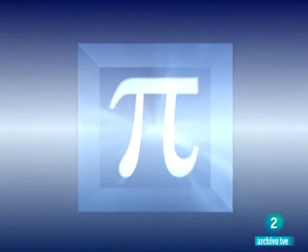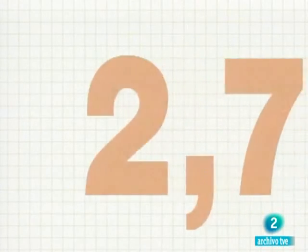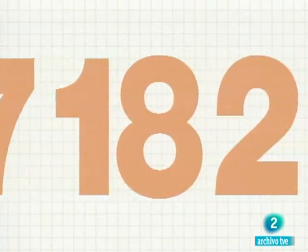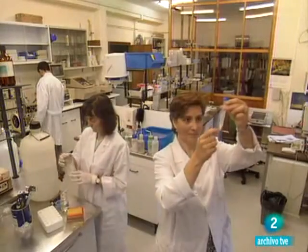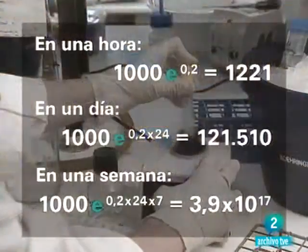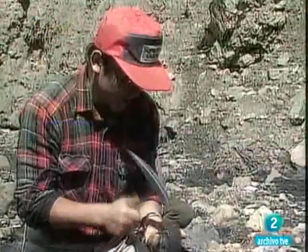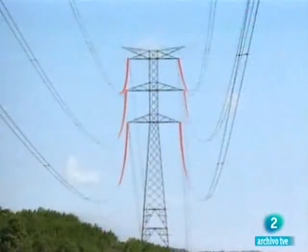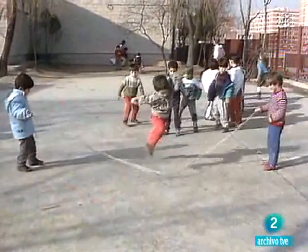Otro número de apariencia extraña y también con nombre de letra es el número e, la base de los logaritmos neperianos. Otro número irracional con infinitas cifras decimales. 2,7182818. Un número que aparece cuando queremos cuantificar el crecimiento de una epidemia, cuando hacemos la prueba del carbono 14 para datar un resto arqueológico y hasta en los cables de la luz.